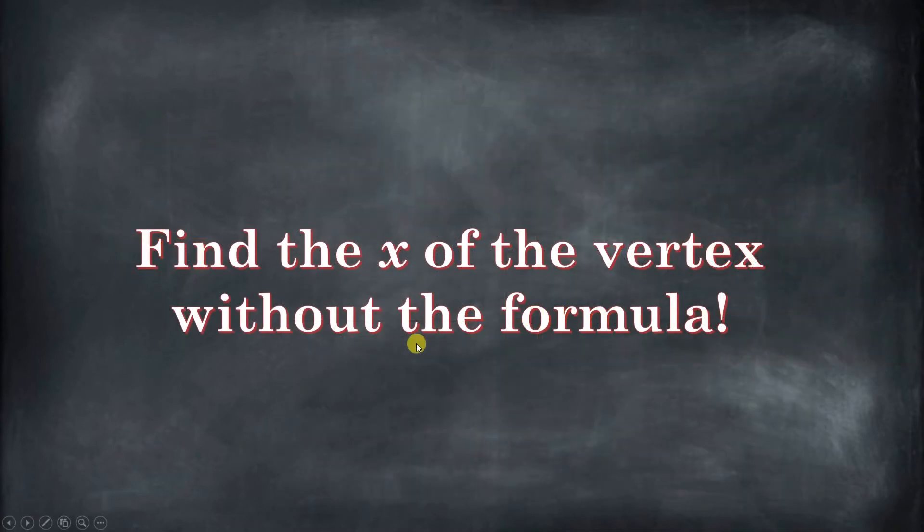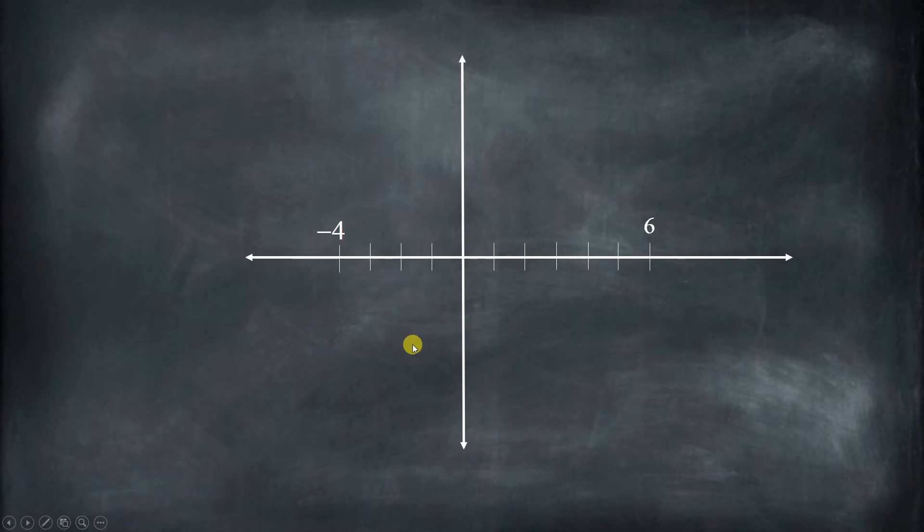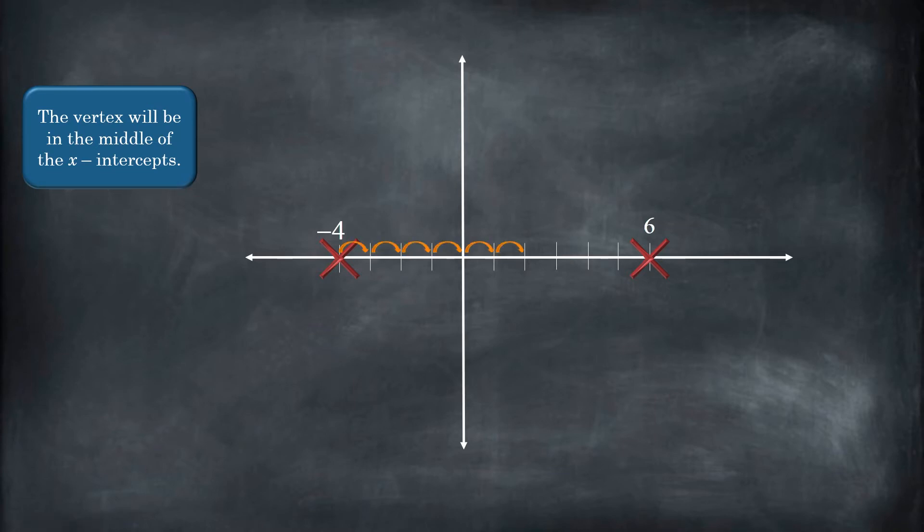So now let's see if we can use that idea to find the vertex without using the formula. Let's say we have these two x-intercepts for a quadratic equation, negative 4 and 6. So we know for sure that the vertex is going to cross right through the middle of that distance. So if we just count, we're going to see we have a distance of 10. Halfway to 10 is 5. So if we start on the left, start counting 5, boom, right there.